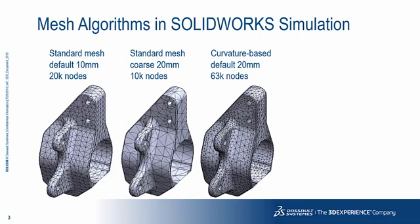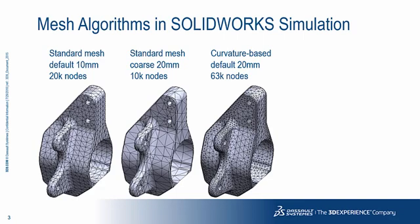The only drawback is that it makes a finer mesh everywhere you have such smaller features. So, if you have a large assembly with lots of fillets, for example, you may end up with a very high number of nodes, even if not necessary to get accurate results.